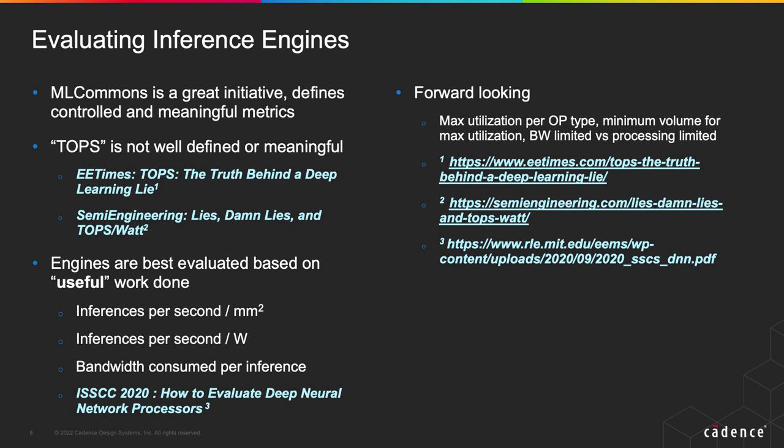One issue is that people evaluating engines are actually evaluating a new engine under development for a tape-out next year or the year after, and you can't run MLPerf on something that's not been fully developed — so getting these metrics is difficult. Some of our savvy customers who have experience in the area ask questions like: what's the max utilization your engine can achieve for this kind of operation, and what's the minimum output volume you need to be able to achieve that utilization? Those sorts of questions give you a sense of what the accelerator is capable of and how it would work on generic networks.